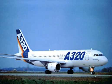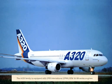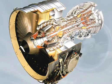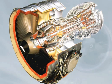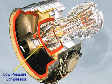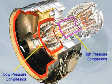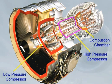The A320 family is equipped with CFM International CFM56-5B series engines. Like most engines today, this engine comprises a low-pressure (LP) compressor stage, a high-pressure (HP) compressor stage, a combustion chamber, and a turbine stage.